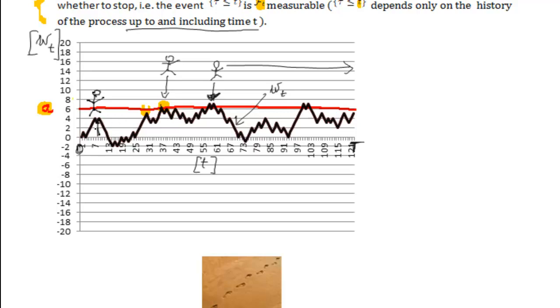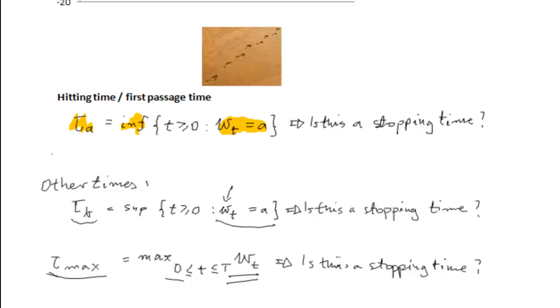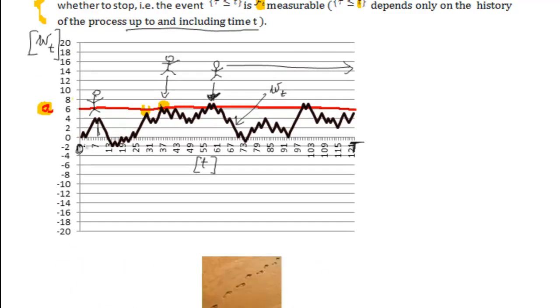But unfortunately, I can only use information available to me at time t. Therefore, I can conclude that tau max is not a stopping time. Because I can't decide whether to stop using information available to me at time little t, which is somewhere here.